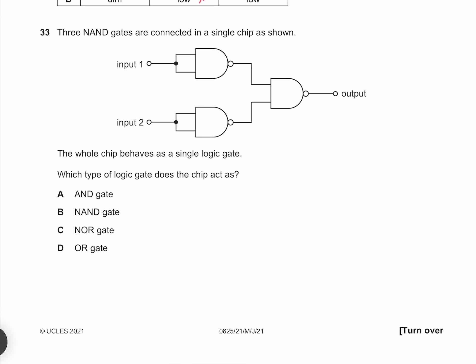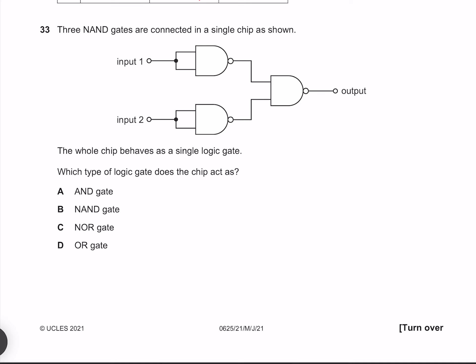Three NAND gates are connected in a single chip as shown. The whole chip behaves as a single logic gate. Which type of logic gate does the chip act as? Because our inputs are tied together, if this is on then this is off, and if this is off then this is on. And the same for input two. And so the only way that our output here is off is if both of these are on. That is only possible when both of these are off, which means that this must be an OR gate.